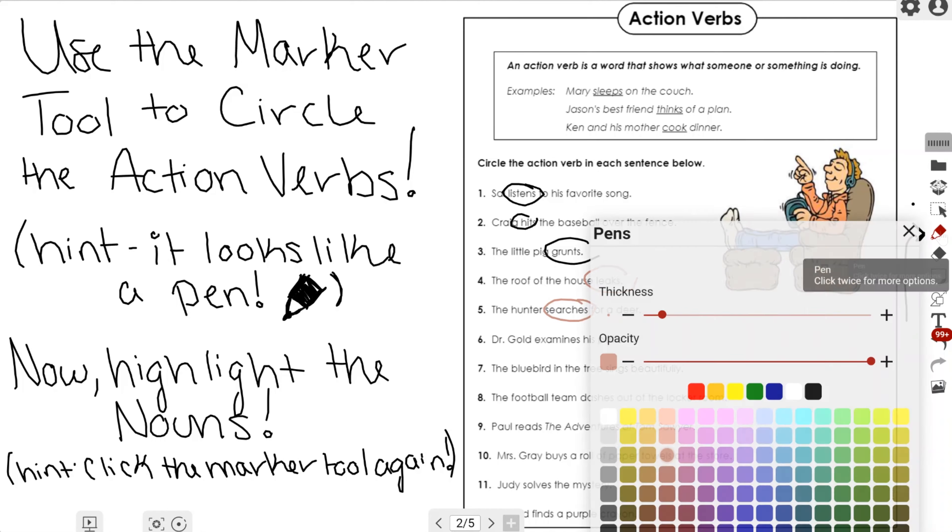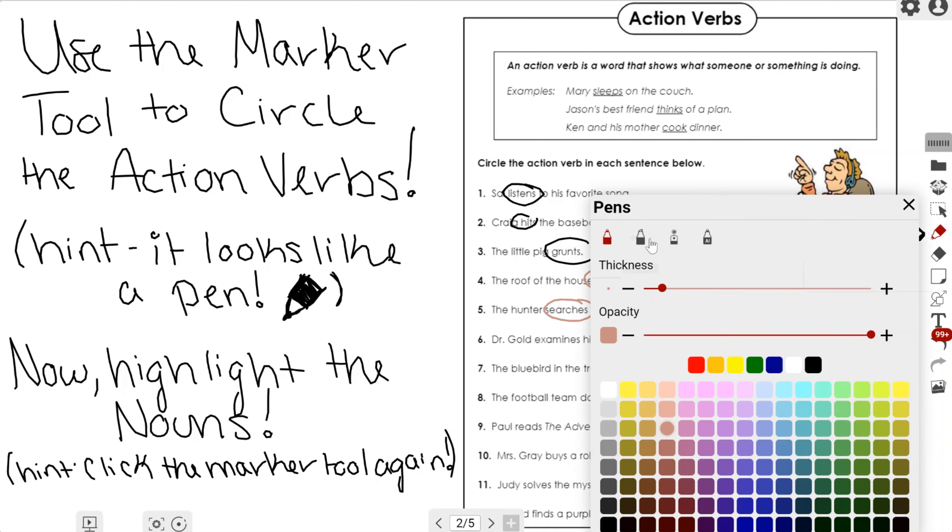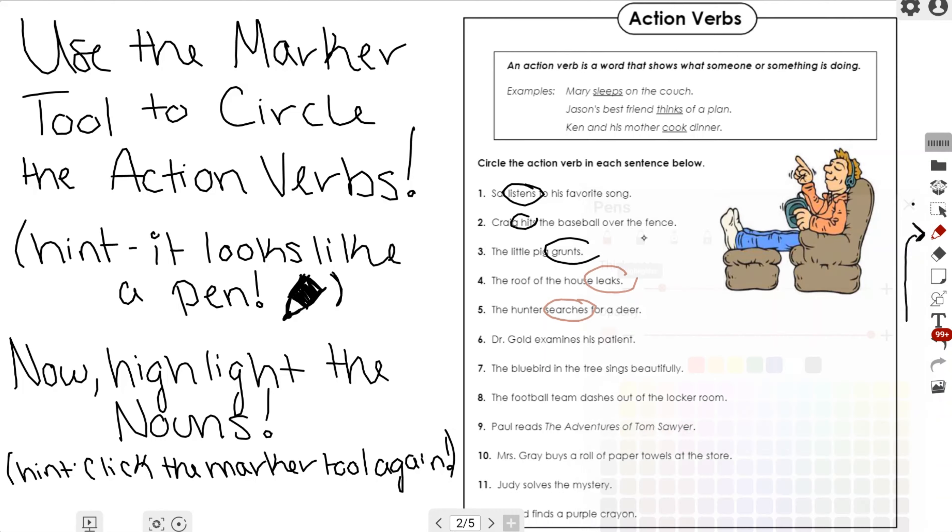If I go back to it one more time, I also have a few different tools I can use at the top. The second tool in is the highlighter tool. You can see I have a few different colors I can choose from, along with another thickness scale, and now I can go ahead and highlight the different nouns in the sentences.